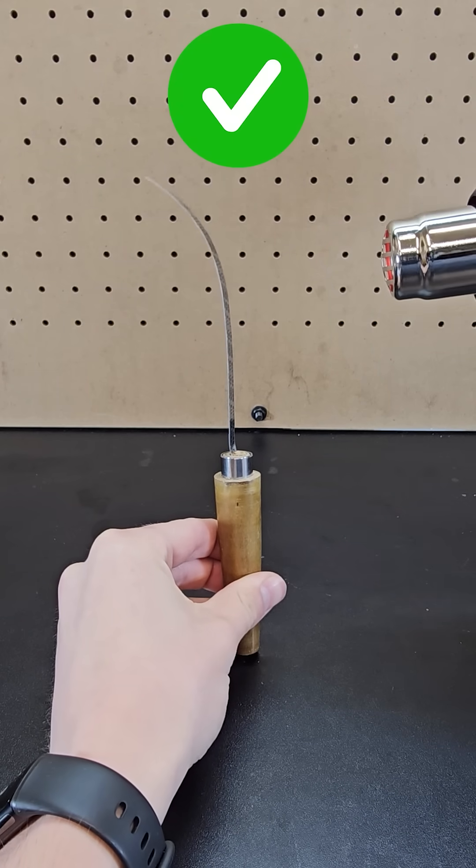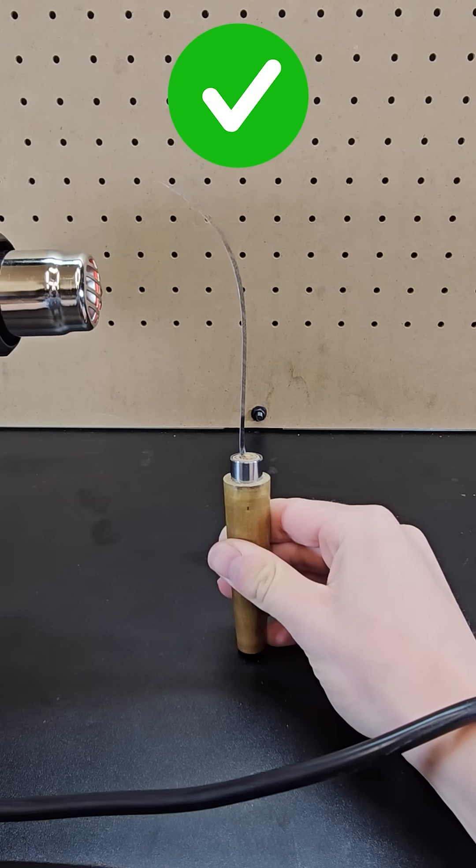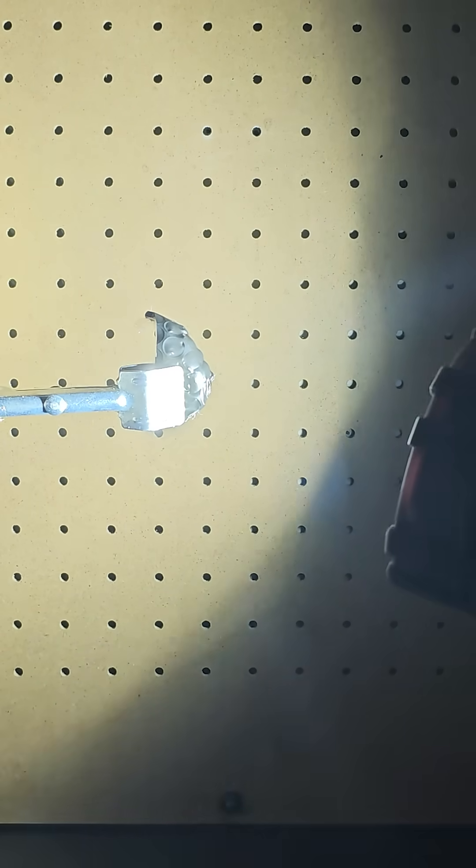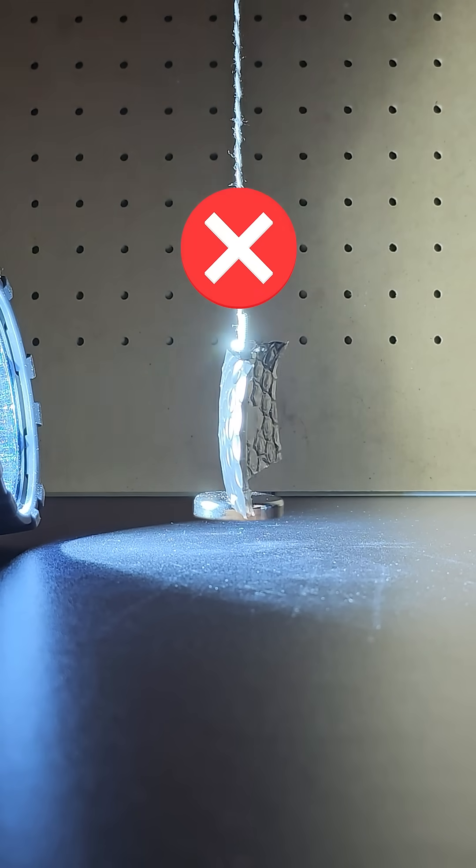A bimetallic strip also does bend the same way, regardless of whether it's heated from the right side or the left side. That means although this super bright flashlight is strong enough to melt plastic if you're not careful, it did not bring this pendulum to a stop abruptly.